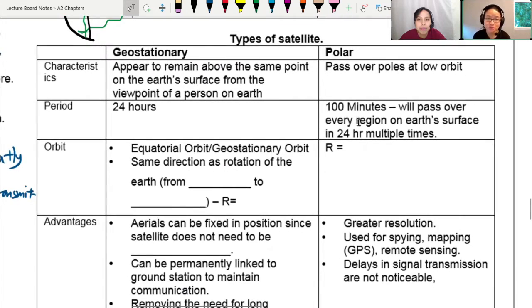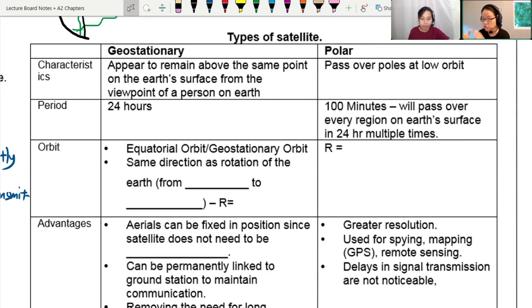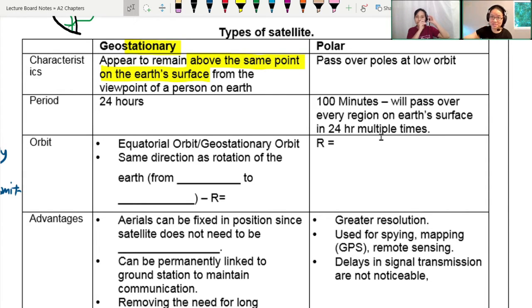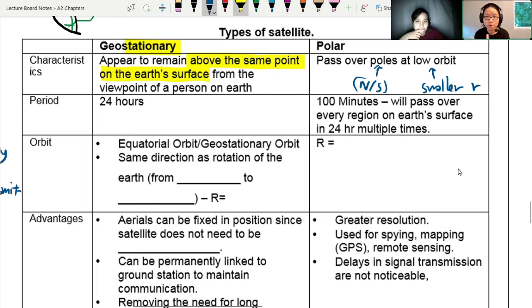First thing we need to know is the characteristics. Geostationary appears to remain above the same point on the earth's surface from the viewpoint of a person on earth. The satellite better always be at the same spot. Whereas for polar, it is over the poles, and it is at a lower orbit. It's closer to the surface of the ground. Because the polar satellites are closer to the surface and it doesn't have to rotate together with the earth, it has a much shorter period. It's only 100 minutes to go around the earth. Whereas for geostationary satellite, it is 24 hours.